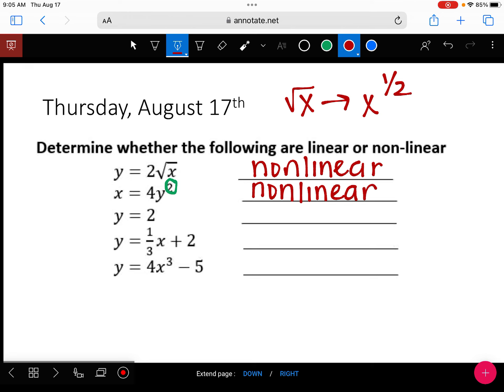Would you put NL? That's fine. All right. Y equals two. Who would say linear? I would agree because we don't have any exponents. That is a linear equation. It's actually a horizontal line.